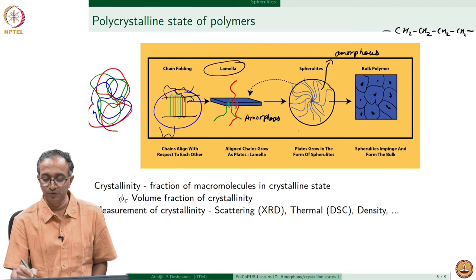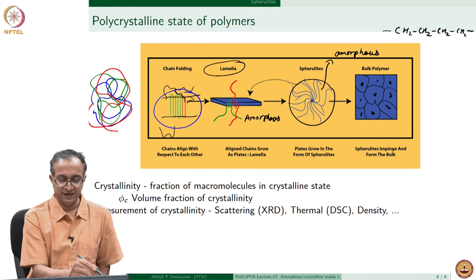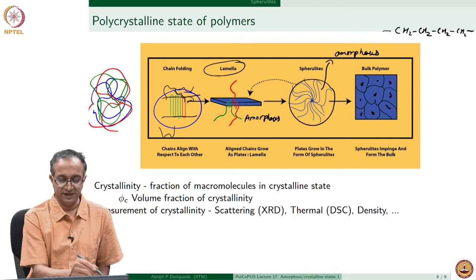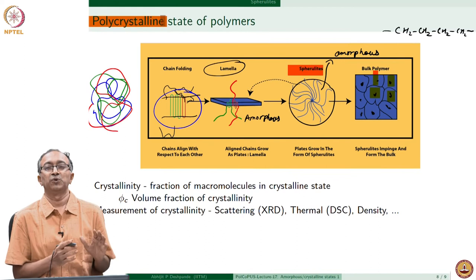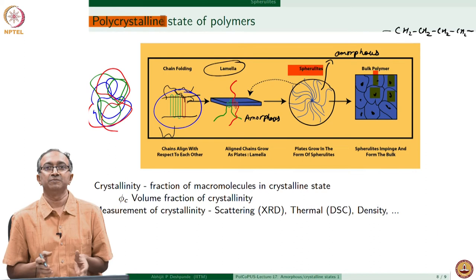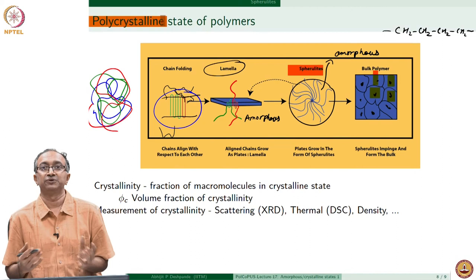The crystalline lamellae grow outward in three dimensions — this is why it is called a spherulitic structure, or spherulite. In bulk polymer, several spherulites impinge on each other, forming the polycrystalline state of a polymer. We have semi-crystallinity because we have both amorphous and polycrystalline material. One hundred percent crystallinity is not possible because crystallization happens at the rate it can, with chains folding locally and aligning to form a unit cell.